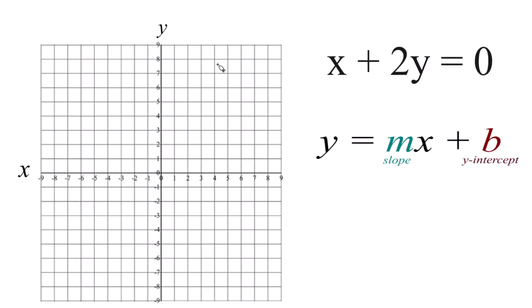All right, let's graph the linear equation x plus 2y equals 0. You can use a table of values for this, that works well, or you can use slope-intercept form. In this video we'll use slope-intercept form. You get the same answer either way.